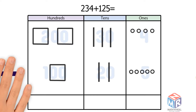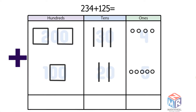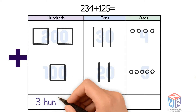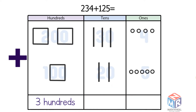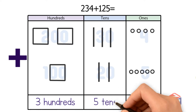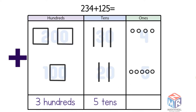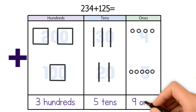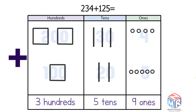Now let's put it all together. We have 3 hundreds, 5 tens, and 9 ones, which means 234 plus 125 is equal to 359.